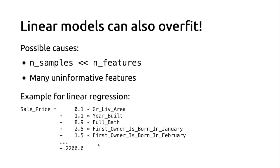So how to deal with this situation where we don't know ahead of time which features are interesting? Either you can try an automated feature selection strategy, which performs statistical analysis to remove features not likely to be predictive — you can look at the scikit-learn documentation for feature selection methods — but today I just want to focus on the alternative, which is to use what we call regularization.